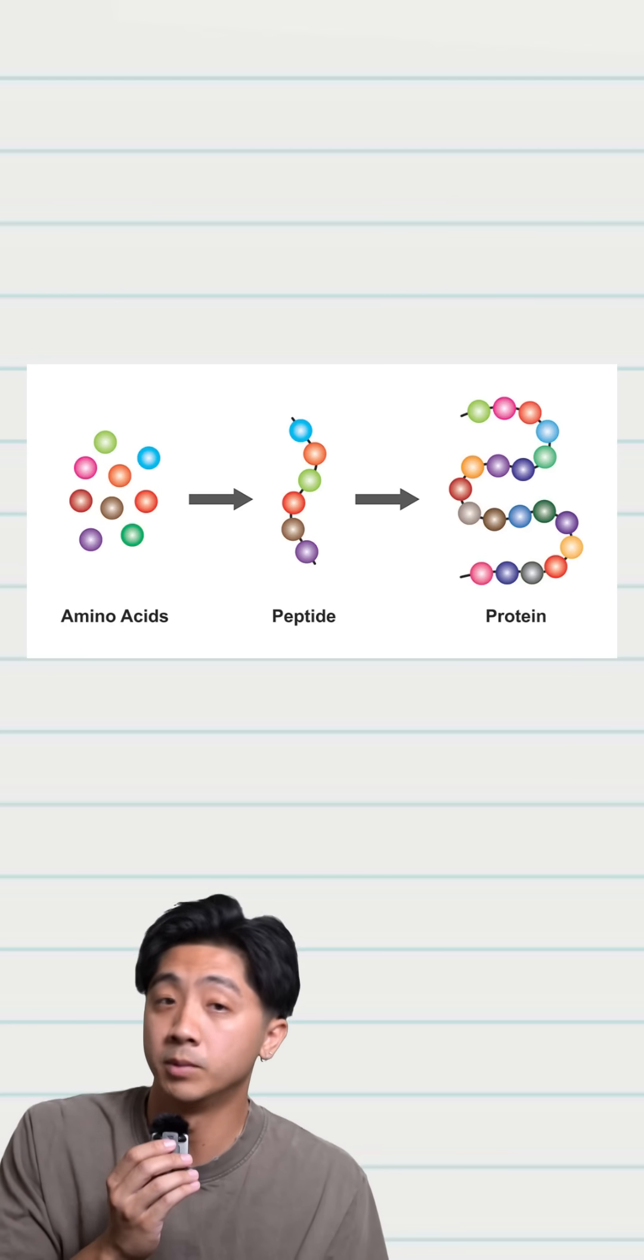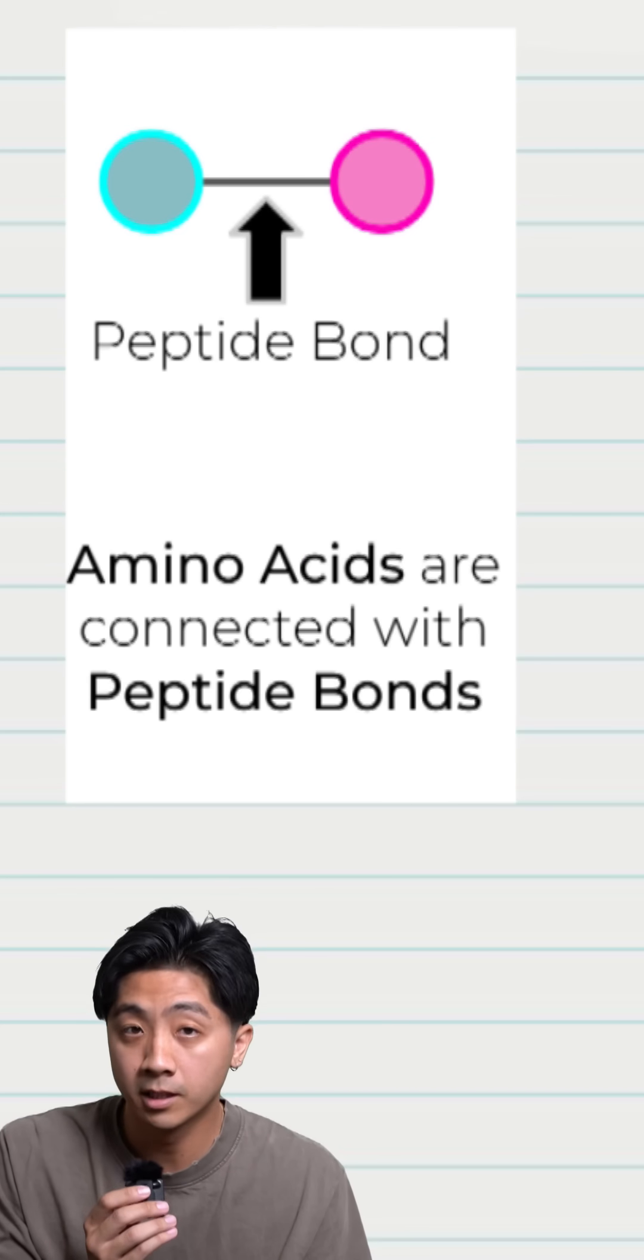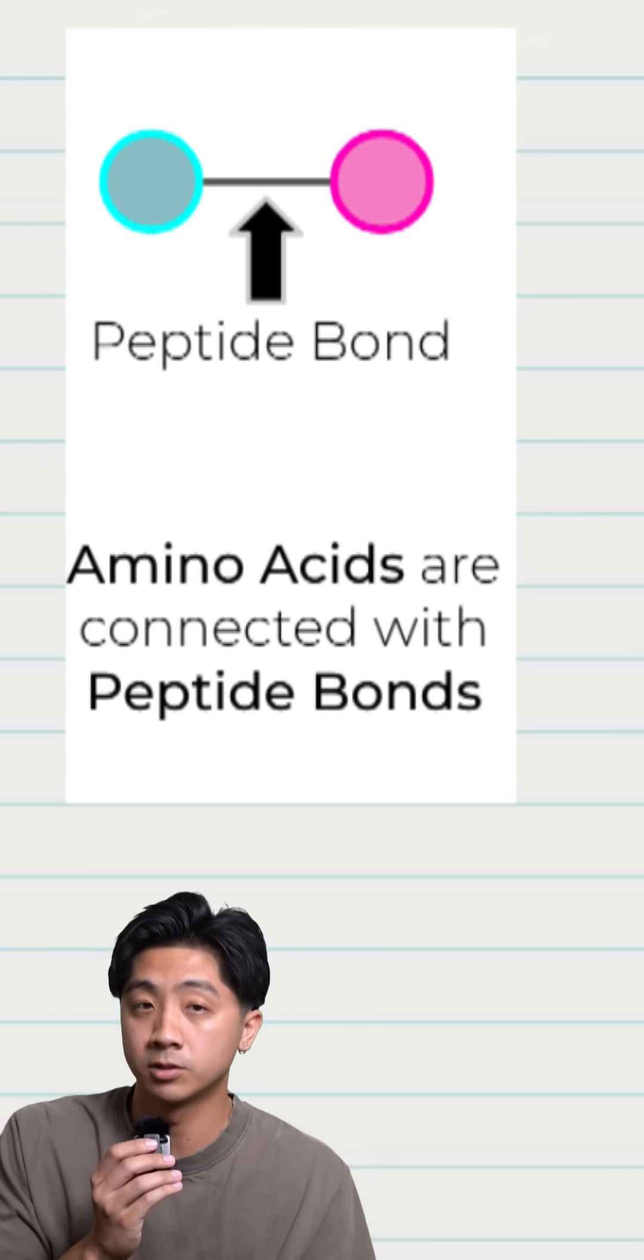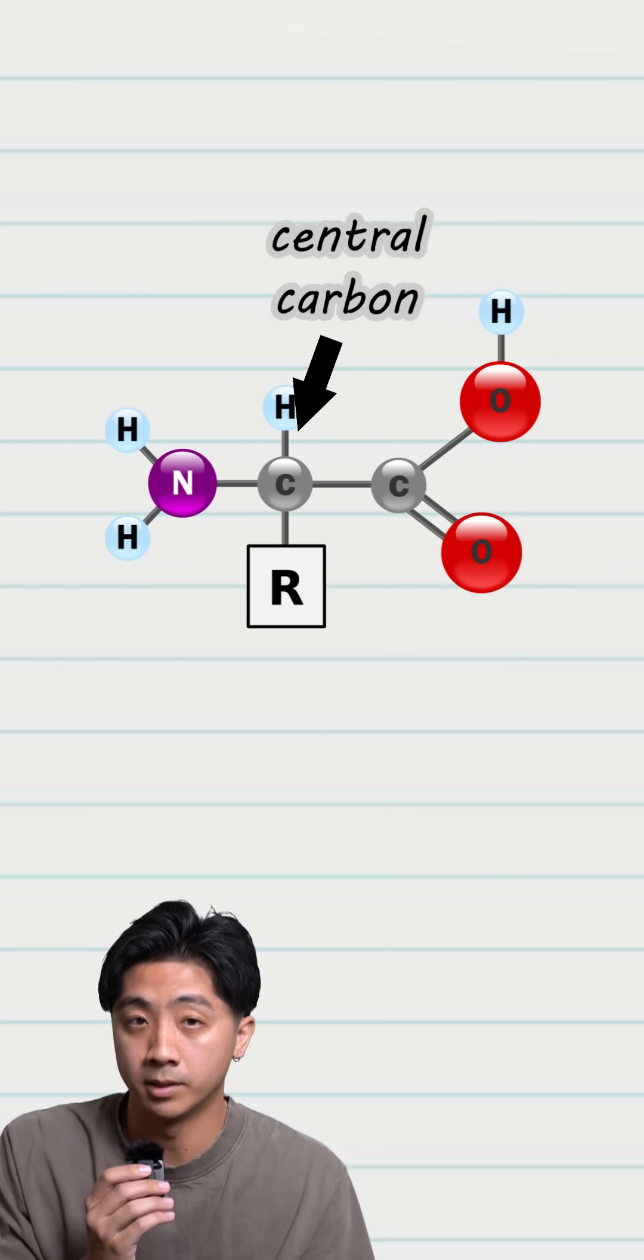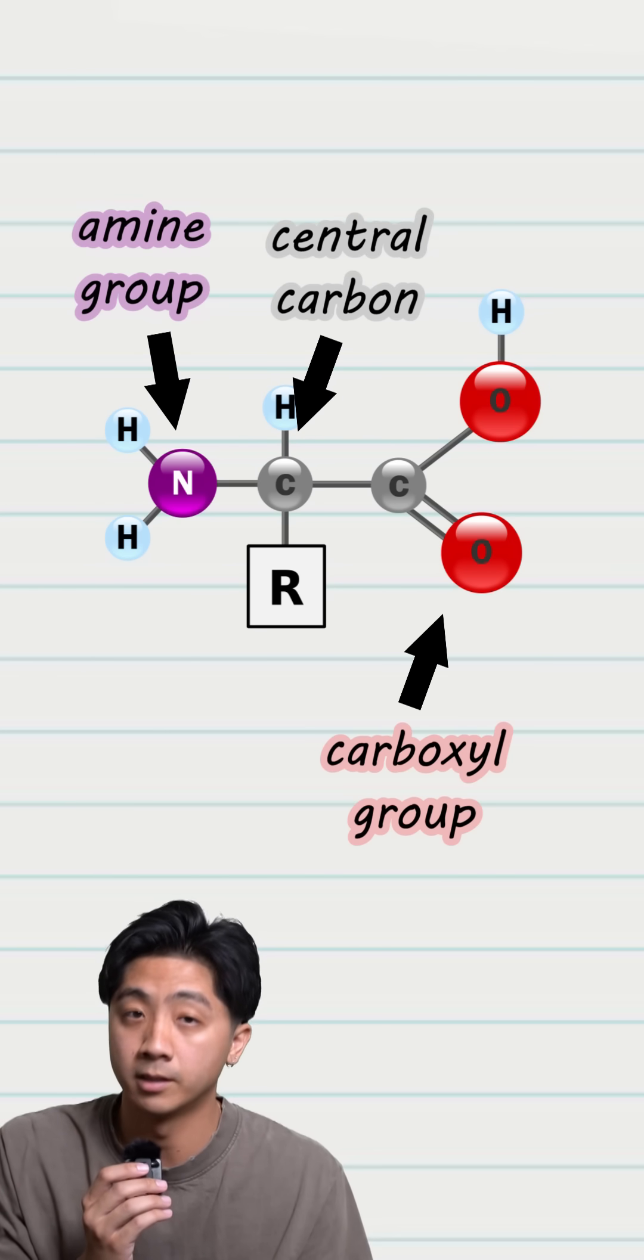Proteins are made of linear chains of amino acids linked together. They are linked together by covalent bonds, but this is also sometimes called peptide bonds. Each amino acid is made of one central carbon, a carboxyl group, an amine group, and an R group.